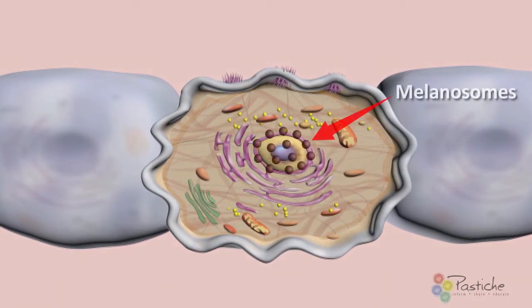When melanosomes release into the extracellular space of the spinosum layer, they are picked up by the keratinocytes using the endocytosis method and PAR2 receptor. After the keratinocyte receives the melanosomes, the keratinocyte continues the journey upward through the layers of the epidermis towards the stratum corneum to desquamation.